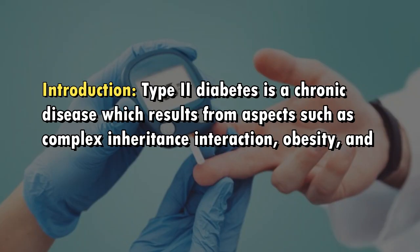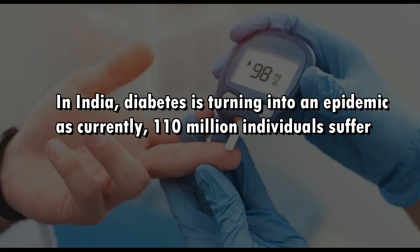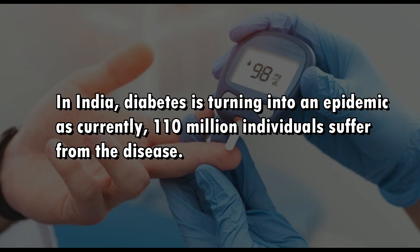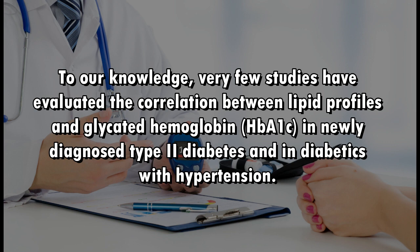Introduction. Type 2 diabetes is a chronic disease which results from aspects such as complex inheritance interaction, obesity, and sedentary lifestyle. In India, diabetes is turning into an epidemic as currently 110 million individuals suffer from the disease. To our knowledge, very few studies have evaluated the correlation between lipid profiles and glycated hemoglobin in newly diagnosed type 2 diabetes and in diabetics with hypertension.